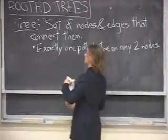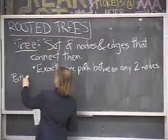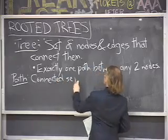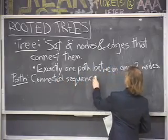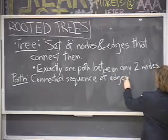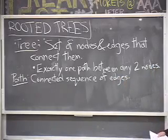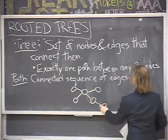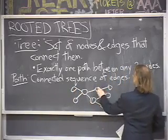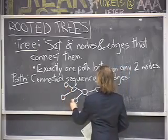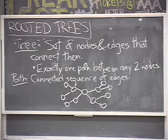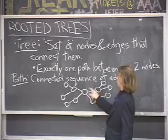What is a path? A path is a connected sequence of edges. Here's an example of a tree. The circles are the nodes. And you can see that in this tree, from any one node to any other node, there's exactly one path that gets you there.